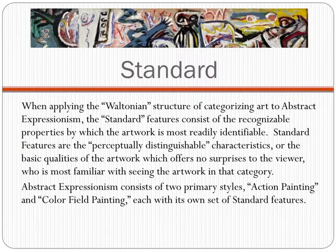When applying the Waltonian structure of categorizing art to Abstract Expressionism, the standard features consist of the recognizable properties by which the artwork is most readily identifiable. Standard features are the perceptually distinguishable characteristics, or the basic qualities of the artwork, which offer no surprises to the viewer who is accustomed to seeing the artwork in that category. Abstract Expressionism consists of two primary styles, action painting and color field painting, each with its own set of standard features.